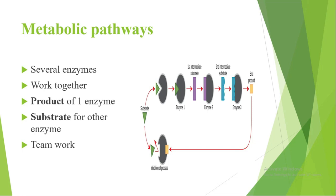Looking at a diagram: we have a substrate that binds with enzyme 1 and produces a product of a certain shape. That product becomes the substrate for enzyme 2, which produces another product. That product becomes the substrate for enzyme 3, which produces the final product. The final product can also feed back to enzyme 1. This is how metabolic pathways are made in our body, with many enzymes involved.